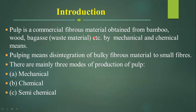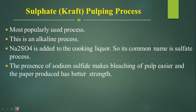Pulp is a commercial fibrous material obtained from bamboo, wood, and bagasse. Bagasse is a waste material obtained from sugar cane. It is obtained by mechanical and chemical means. Pulping means the disintegration of bulky fibrous material into small fibers, and these small fibers help us to form paper. There are mainly three modes of production of pulp: mechanical method, chemical method, and the semi-chemical method.